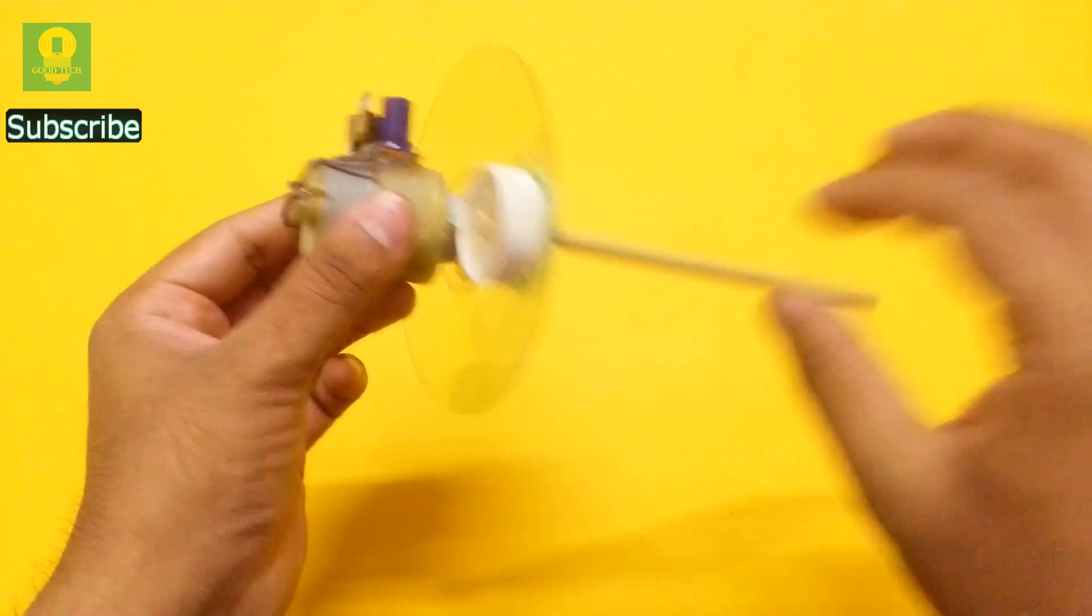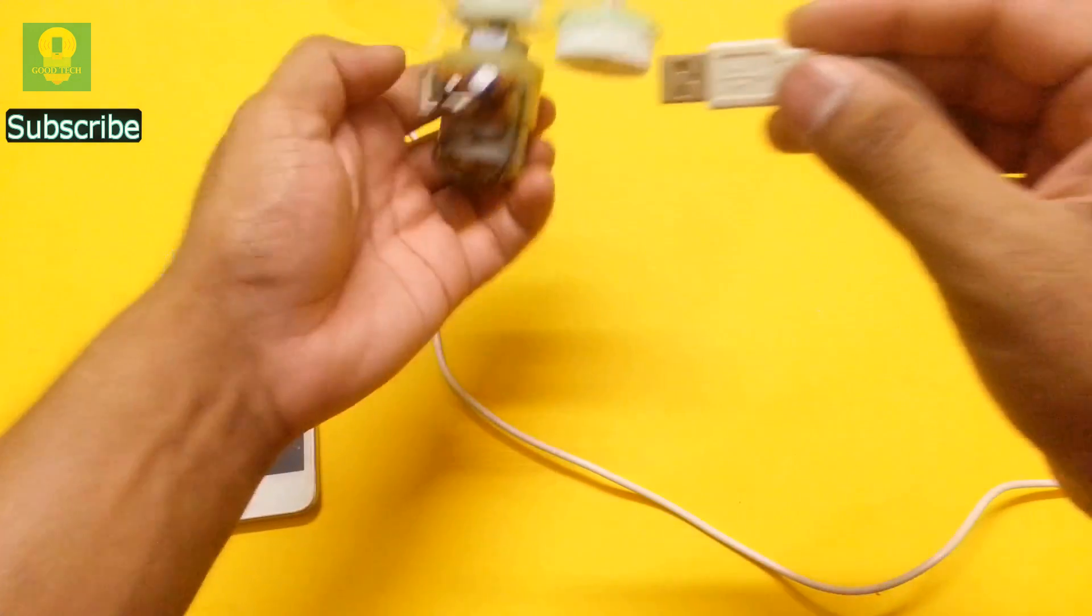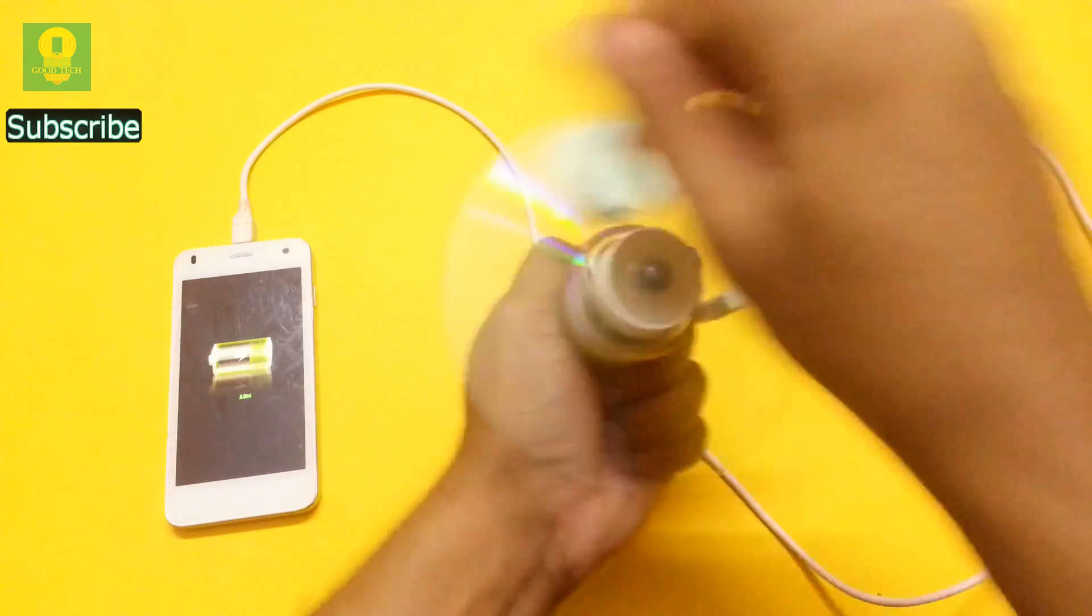Our hand powered USB charger is now ready. Connect a mobile phone to the USB port. Rotate the motor shaft at a uniform speed. We see that the mobile starts to charge really well.